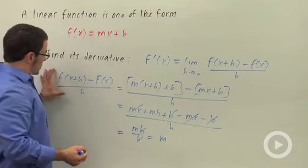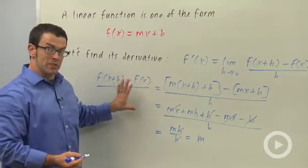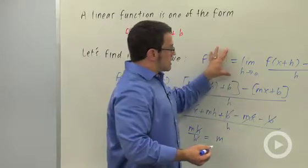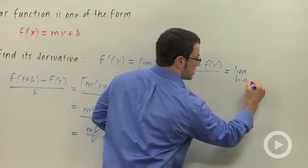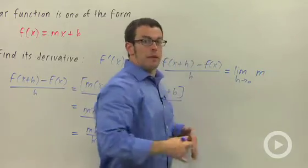So the whole difference quotient, f of x plus h minus f of x over h, simplifies to m. So this limit becomes the limit as h approaches 0 of the constant m. And that's just m.